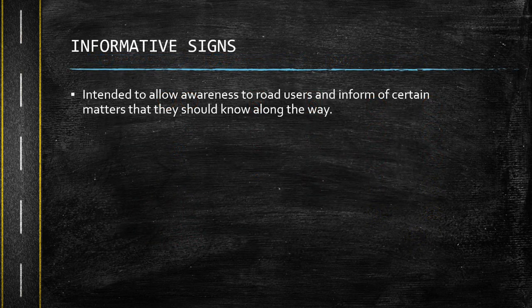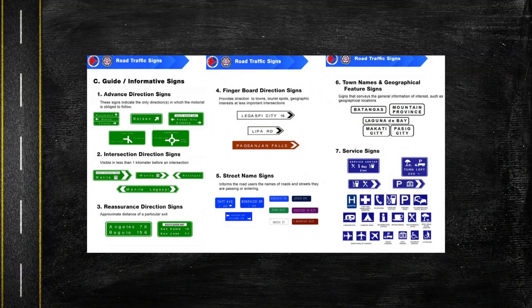The last type would be informative signs. These are intended to allow awareness to road users and inform them of certain matters they should know along the way. First are advanced direction signs, which inform motorists of the directions they are obliged to follow — for example, if going to Bataan or Batangas, which road to take. Second is intersection direction signs, which can be seen one kilometer before an intersection.